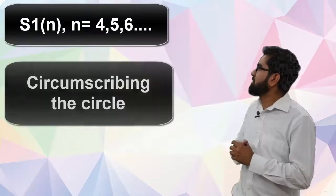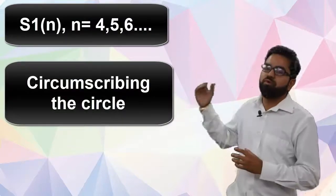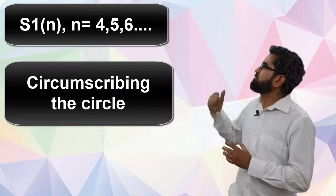There is a family of polygons S1 which are circumscribing the circle, and this family has n varying from 4 to n. That means 4, 5, 6, so it can be a square circumscribing the circle, it can be hexagon, it can be pentagon.